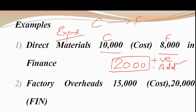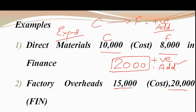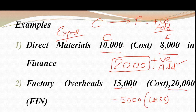Costing के value को finance के value से less करने के बाद — देखो यहाँ factory overheads: costing में 15,000, finance में 20,000। तो 15,000 − 20,000 = minus 5,000। Answer negative आया तो less करेंगे। बस यही base है — यह rule apply करो, आपका answer right आएगा। यह rule expenses के लिए है।